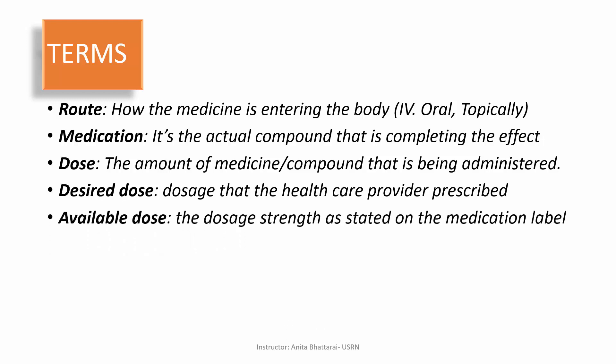Next we have available dose. Available dose is the strength as stated on the medication label — that is the label given on the bottle, vials, or tablets when buying medications. Sometimes it differs from the dose ordered by the physician, so we need to calculate the dose to give the correct amount of medication to the patient.